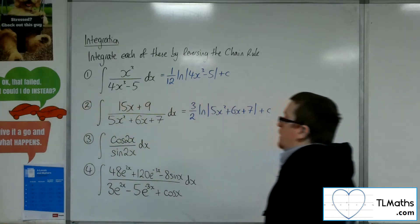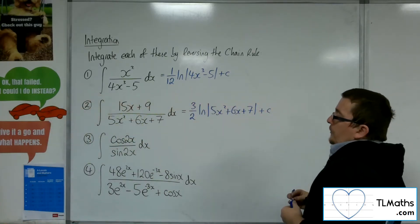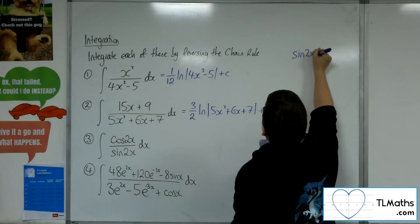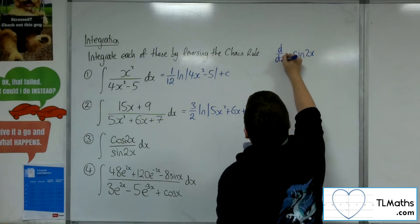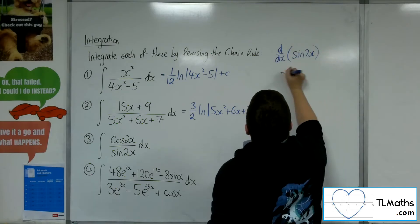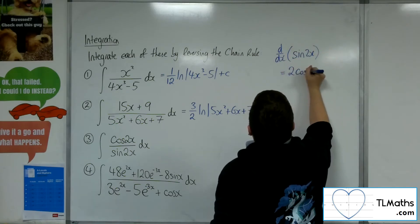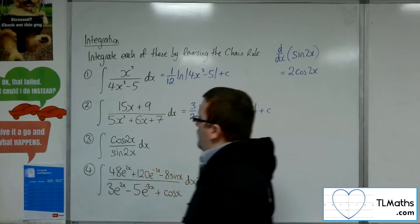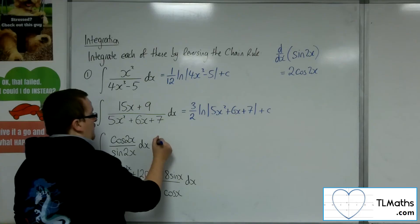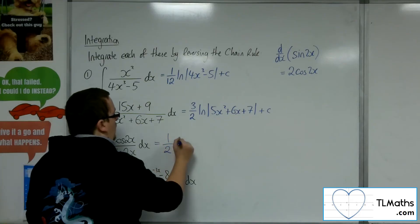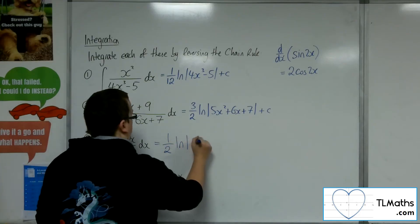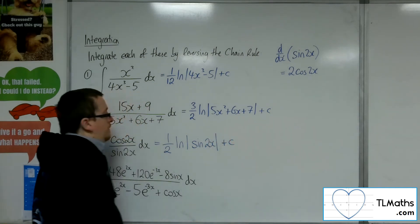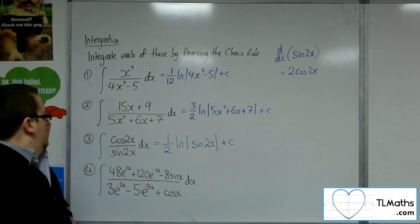Let's have a look at number 3: cosine of 2x over sine of 2x. If I look at sine of 2x and differentiate that, I get 2 cosine 2x. Now in the numerator I've got cosine of 2x, so I've actually got a half of what I need. And so this would be 1 half log of sine of 2x, plus C.